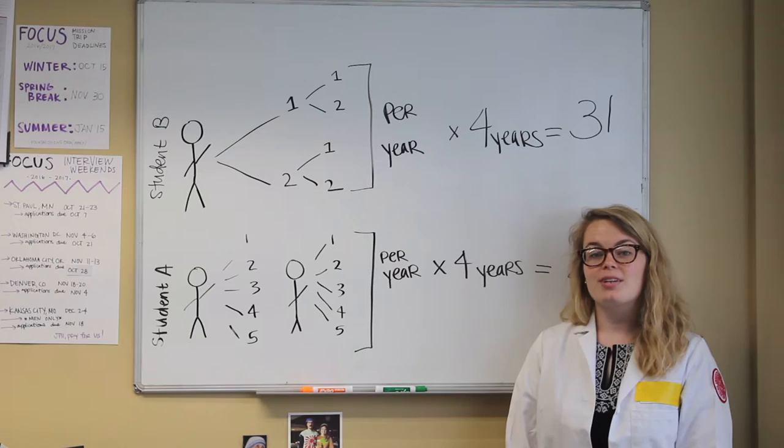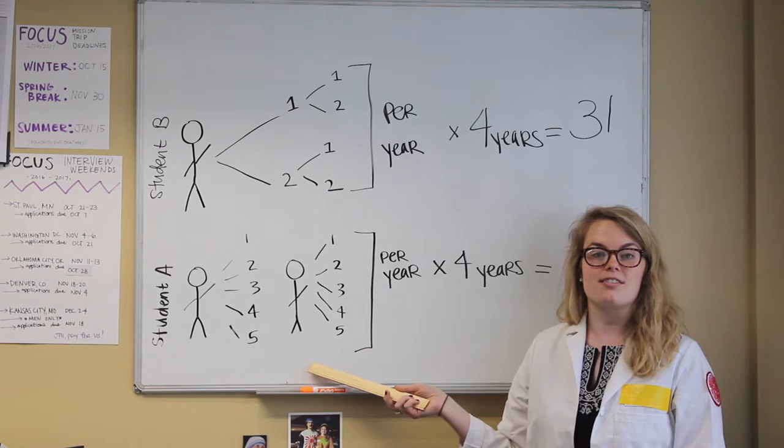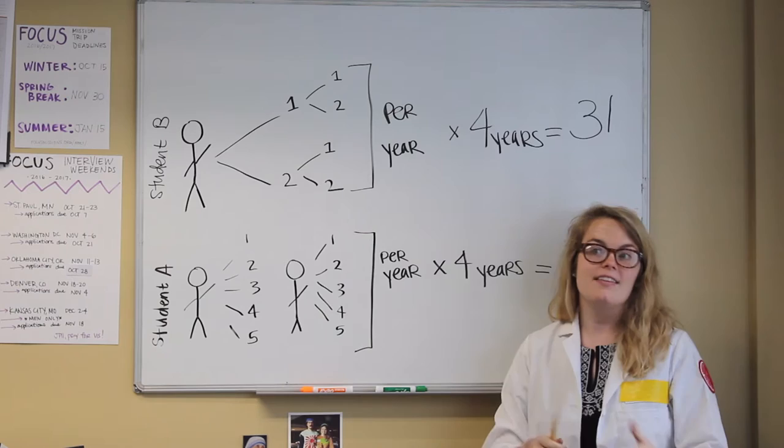Let's look at student A. Student A gets to campus and immediately at the beginning of the semester starts investing in five students, and then next semester starts investing in five other students. At the end of the year, the student has reached out to 10 students, which is great.